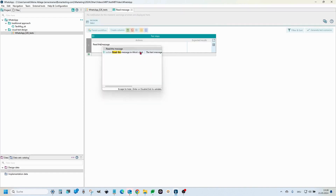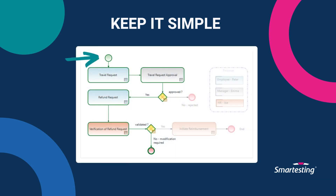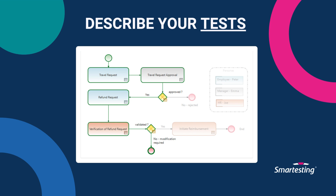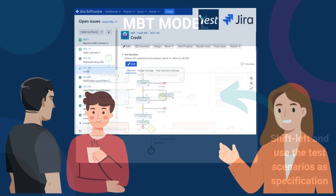Two things are important to be successful. First, keep it simple. As you can see from this palette of SmartTesting's MBT tool Yeste, we avoid any kind of formalism. A workflow consists of a start point, one or several end points, and a few elements in the middle, all linked by arrows indicating the direction of flow. Second, describe your tests, not the system design. Models are often associated with system architecture and design, but that's not what works best in testing. Describe your test scenarios and use this description to clarify what remains vague in the requirements. In a true shift-left approach, the model becomes part of the system specification.